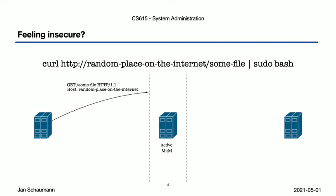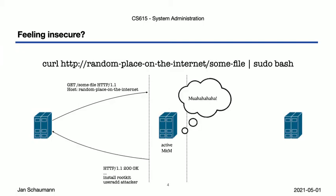But this is not the only issue. We also know that instead of a passive attacker, we might have an active attacker in the middle, and then they can not only see all the traffic but intercept it and reply instead of the server we were trying to reach, slipping in whatever nefarious commands they want. And since we're piping this directly into pseudo-bash, our host is compromised.